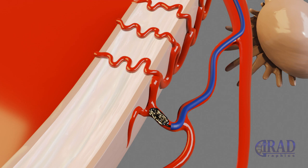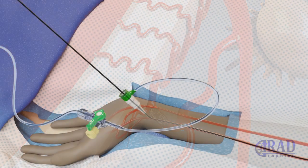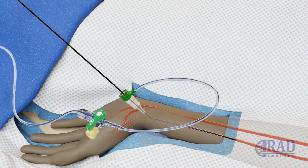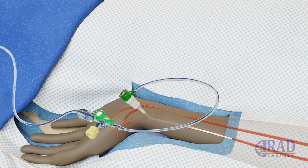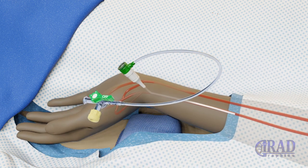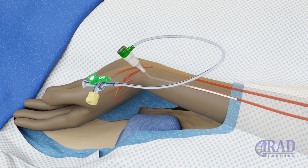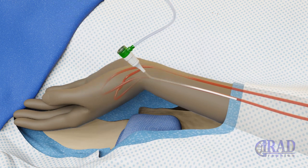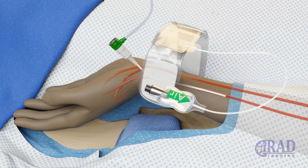All catheters and microcatheters are subsequently removed. Then, the saline infusion is stopped. The wrist is lifted, and a TR band is placed on the wrist.